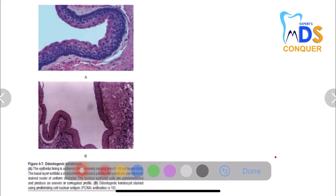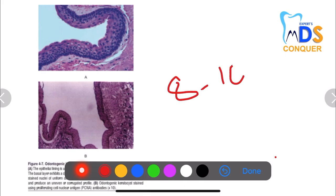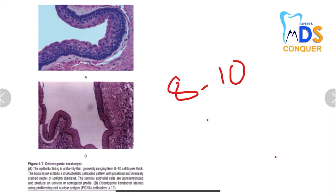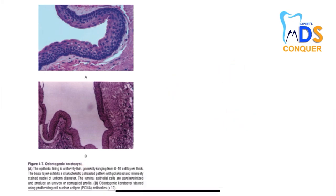Next, coming to cysts — the tombstone appearance or picket fence appearance, with an 8 to 10 layer-thick lining of epithelium in a palisaded pattern, is seen with OKC (odontogenic keratocyst). This is a very important histological picture of OKC — just grab it.